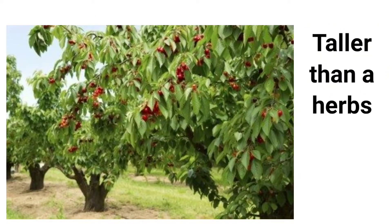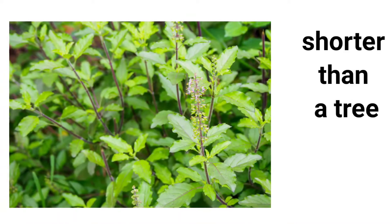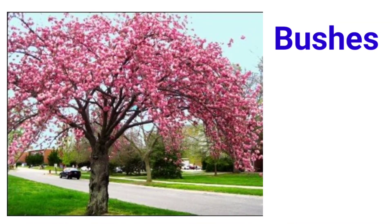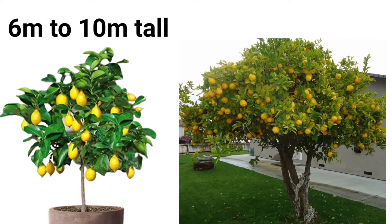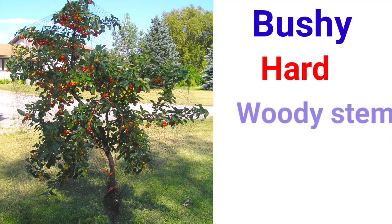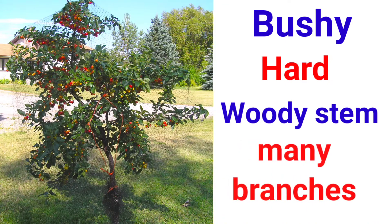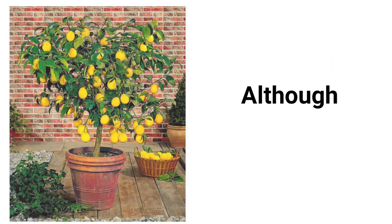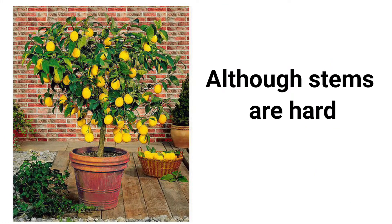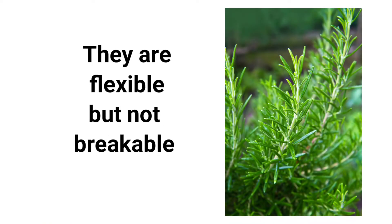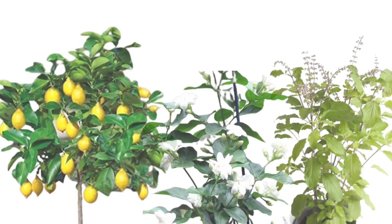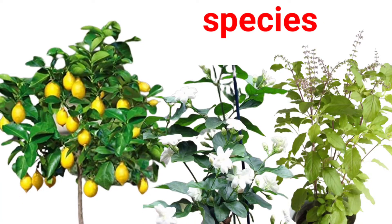Shrubs are medium sized woody plants. They are taller than herbs and shorter than a tree. They are also called bushes. Their height usually ranges from 6 meters to 10 meters tall. Their features include bushy, hard and woody stems with many branches. Although stems are hard, they are flexible but not breakable.